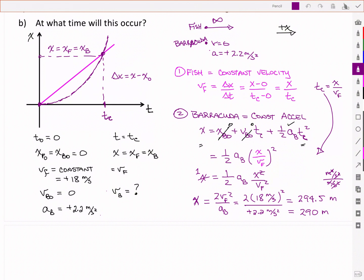So the time of capture, let's go back up to the equation we have up above. Time of capture is going to be the position, the common position, divided by the velocity of the fish. I know both of those now.